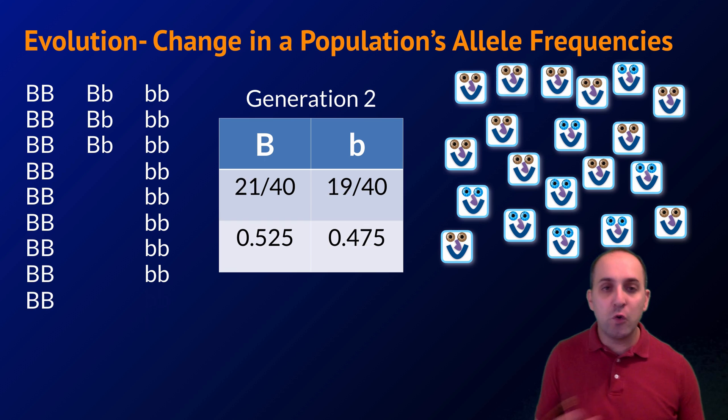In generation 2, we see that there's a shift in the frequencies of the big B and the little b alleles. Specifically, we see that there's been an increase in the number of brown-eyed individuals and a decrease in the number of blue-eyed individuals. Whether or not this is due to natural selection or some other evolutionary force is not important for our discussion right now. What is important is the recognition that the frequencies of the alleles in our gene pool has changed.